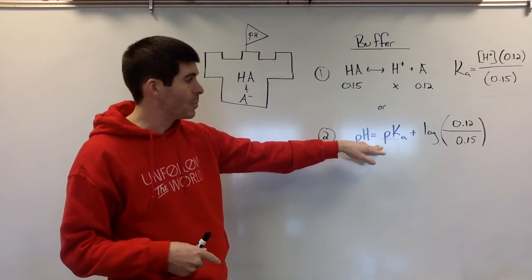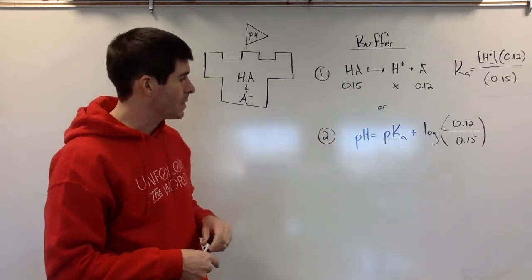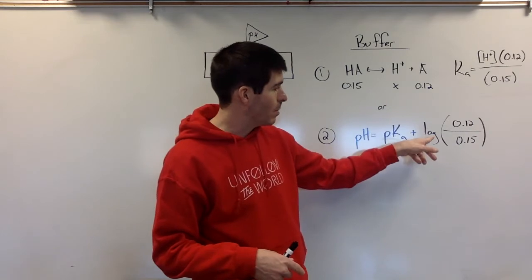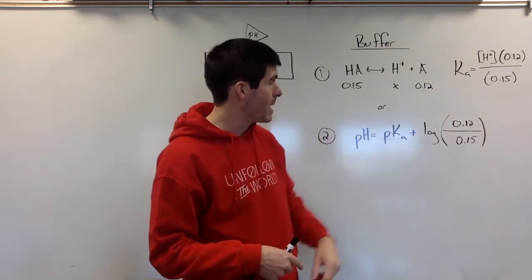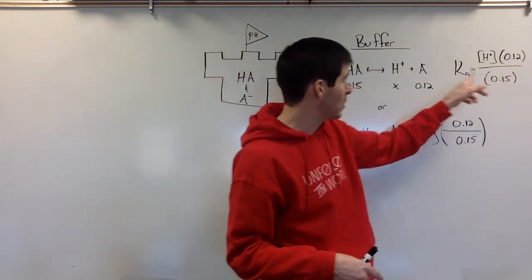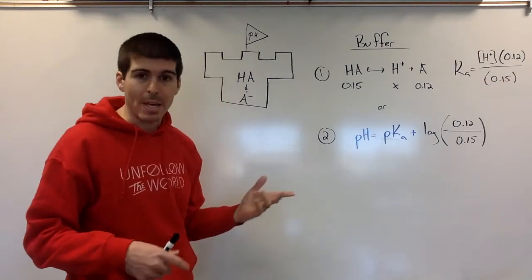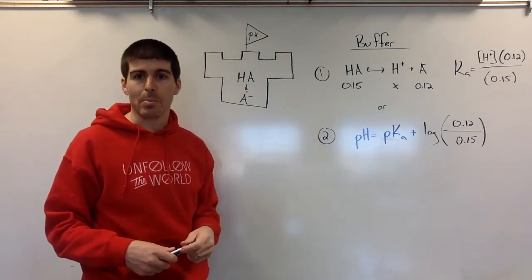we have the Henderson-Hasselbalch equation, which lets us take the pKa and the log of the acid over the base, which is kind of the same over here, the acid over the base, to give us a pH. But what does a buffer do? How does it protect the pH?